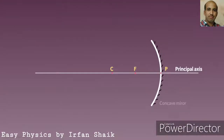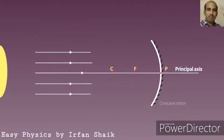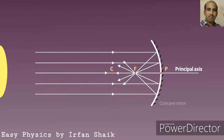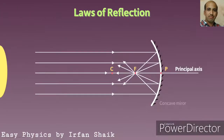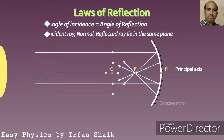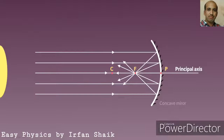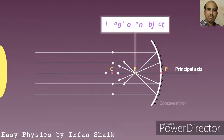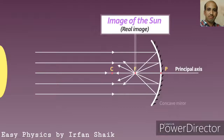Let us consider the sun is at infinity from the mirror. All the parallel rays from the sun are incident on the mirror. These light rays will follow the laws of reflection: the first law states that the angle of incidence equals the angle of reflection; the second law states that the incident ray, normal, and reflected ray lie in the same plane. All light rays after reflection converge at the focus, and the image forms there. This image of the sun is a real image.